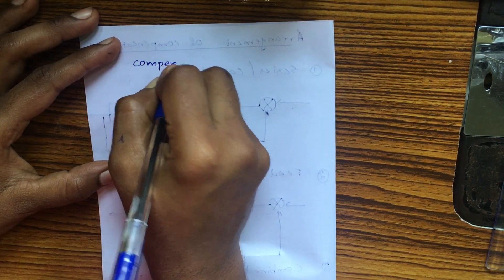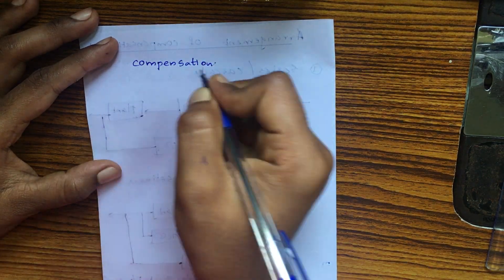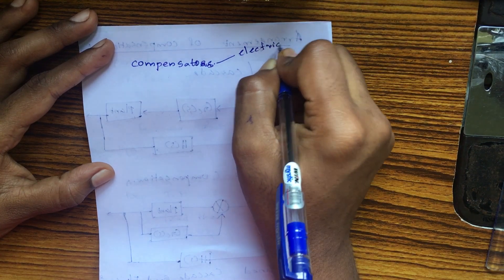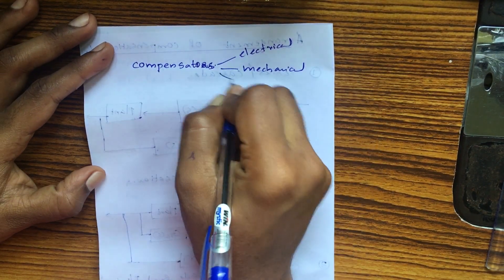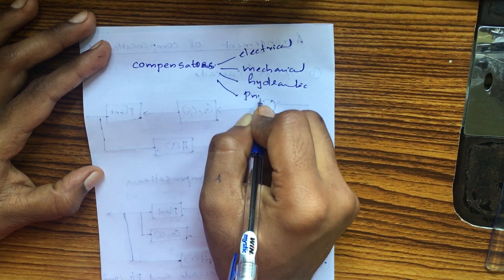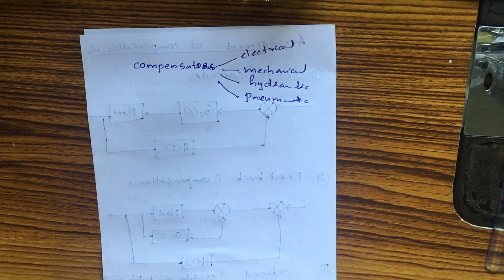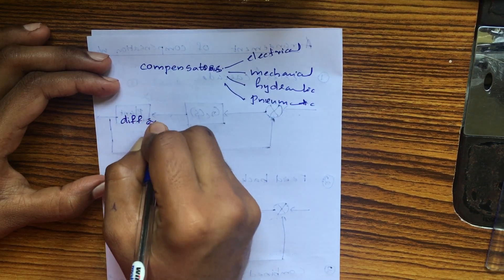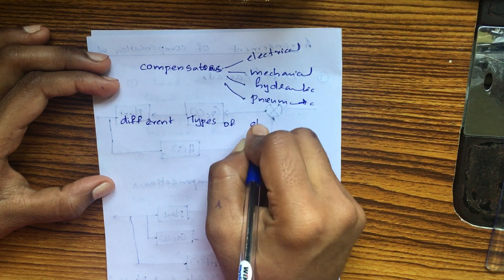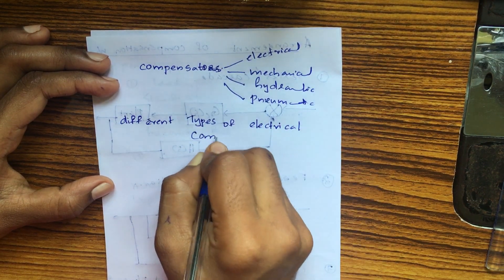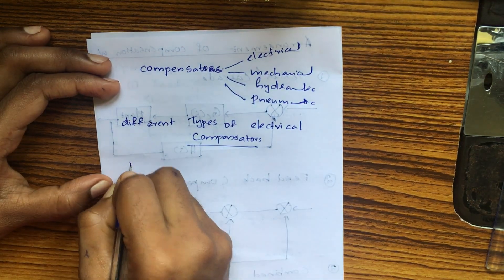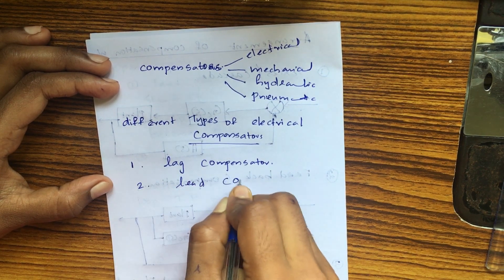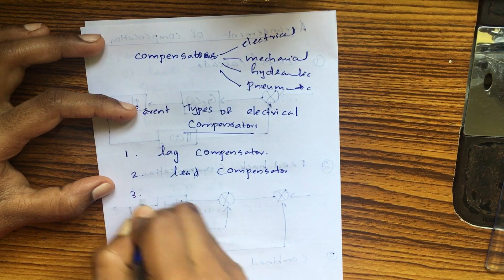Compensators are classified by their physical nature: electrical, mechanical, hydraulic, and pneumatic. Among electrical compensators, the first type is lag compensators, the second is lead compensators, and the third is lag-lead compensators.